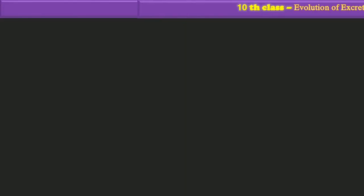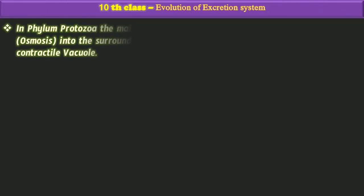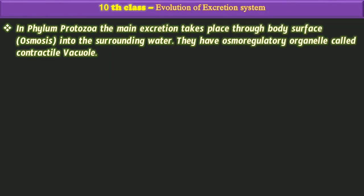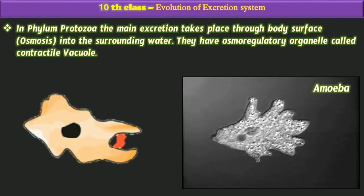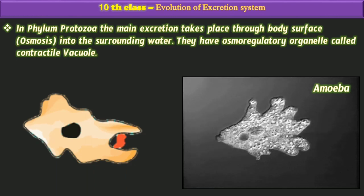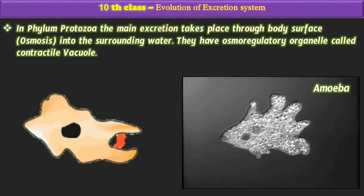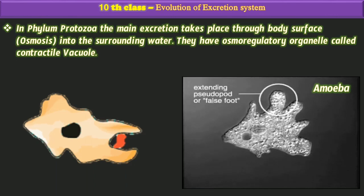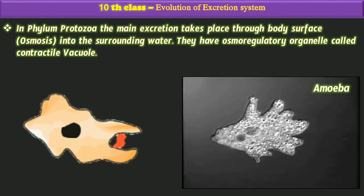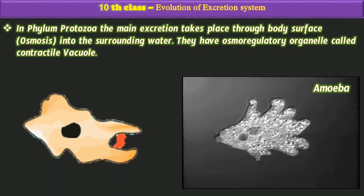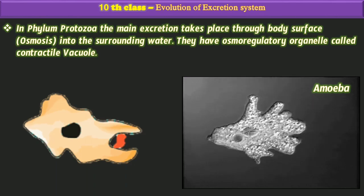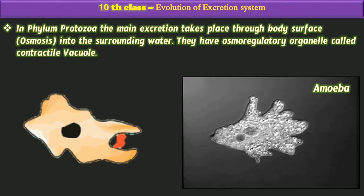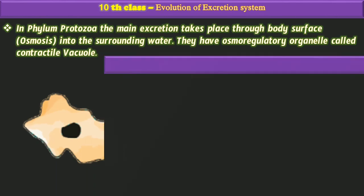In phylum Protozoa, the main excretion takes place through the body surface through the process of osmosis into the surrounding water. They have osmoregulatory organelles called contractile vacuoles. For example, we can observe this type of excretion in amoeba.